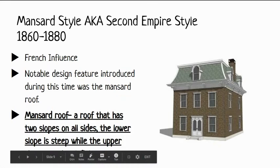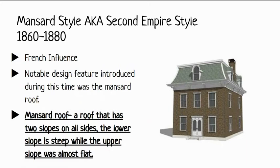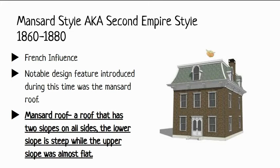The Mansard style — if you picture the apartments across the parking lot, this is what all those apartments are shaped like. It's a French influence, called the Mansard style, also known as the Second Empire. Not only was the house a particular style, they also introduced the roof of the same name — the mansard house with the mansard roof. Basically it's a roof that has two slopes on all sides: the lower slope is really steep and the upper slope is almost flat. The space inside could actually be living spaces like a bedroom, and it was still regular normal height inside — not low at all.